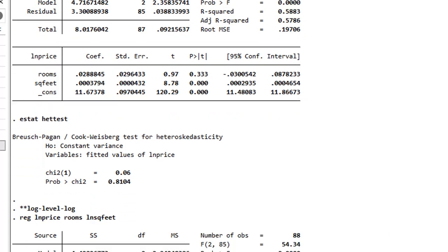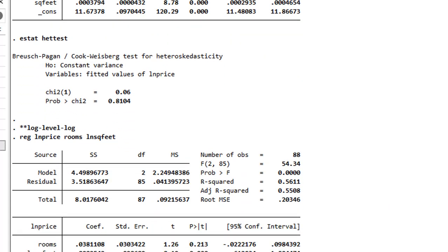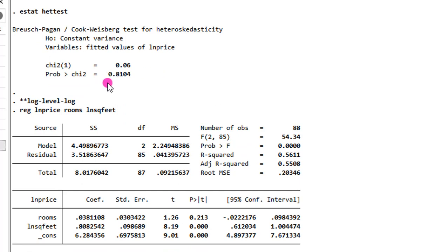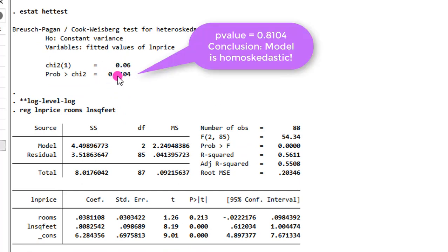Our main interest here is the heteroskedasticity result, which is the Bruch-Pagan test. And we can see the p-value here, 81%, clearly above 5%. So we can see that by transforming the model using the log-level functional form, it has corrected for heteroskedasticity.